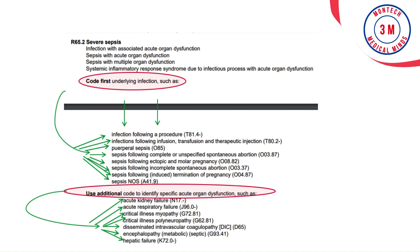Let's walk through an example of severe sepsis. Severe sepsis is a disease process starting from sepsis, which is an infection the patient develops. Once sepsis develops, it may become severe — called severe sepsis, also defined as organ failure due to sepsis. The disease process happens in three levels: the patient develops sepsis, which becomes severe sepsis, and then due to severe sepsis, the patient develops organ failure. Sepsis is the etiology of severe sepsis; severe sepsis is the etiology of organ failure; and organ failure is the manifestation of severe sepsis.